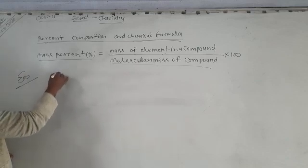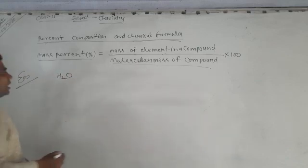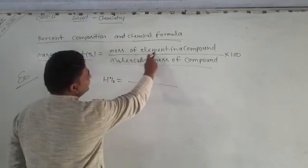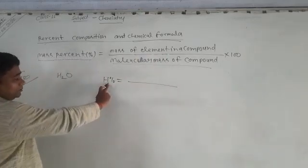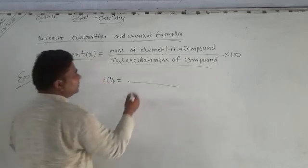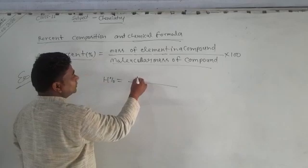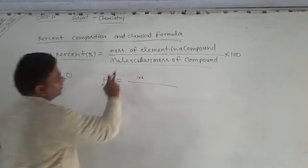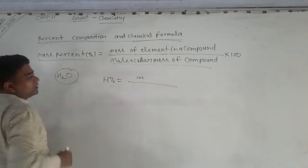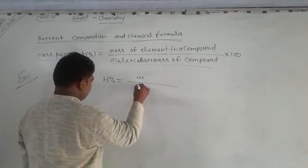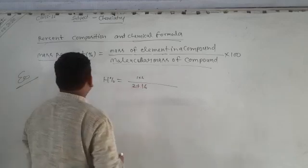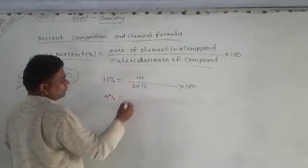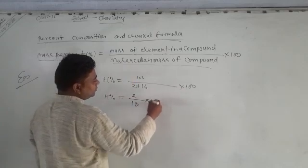Take water, H2O. For percentage of hydrogen, mass of element hydrogen has molecular weight 1 into 2. The molecular mass of compound water is 2 plus 16 into hundred. So percentage of hydrogen is 2 upon 18 into hundred.